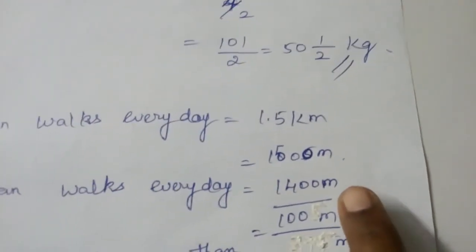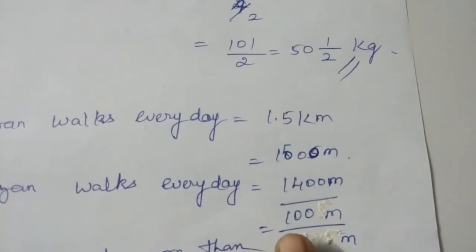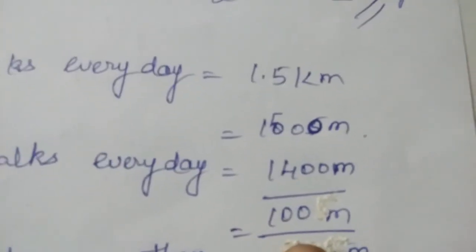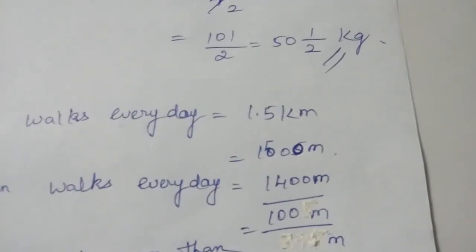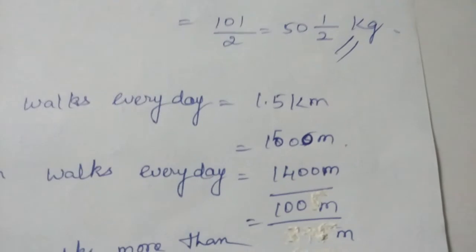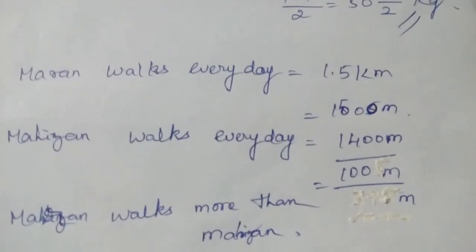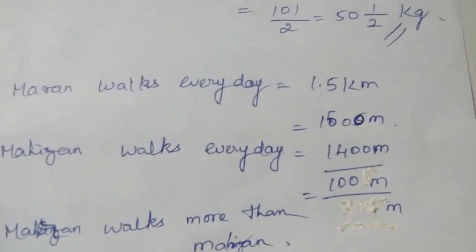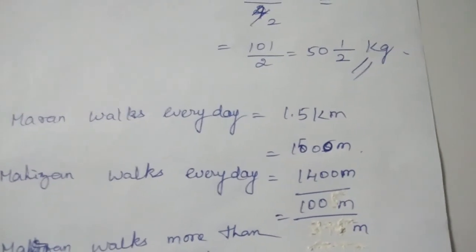When you subtract this distance from this distance I am getting the value to be 100 m. So the difference between them is nothing but 100 m. And the question is who walks more distance. The more distance walked is by Maran. So Maran walks more than Mahijan which is 100 m. That is the answer for this question.